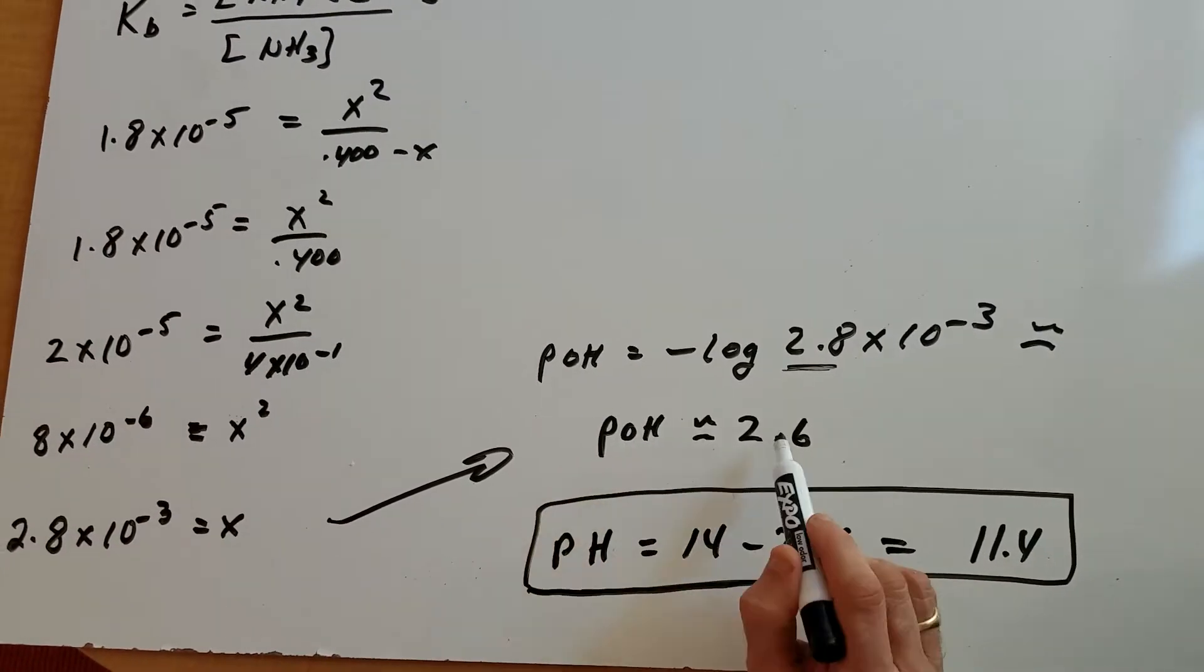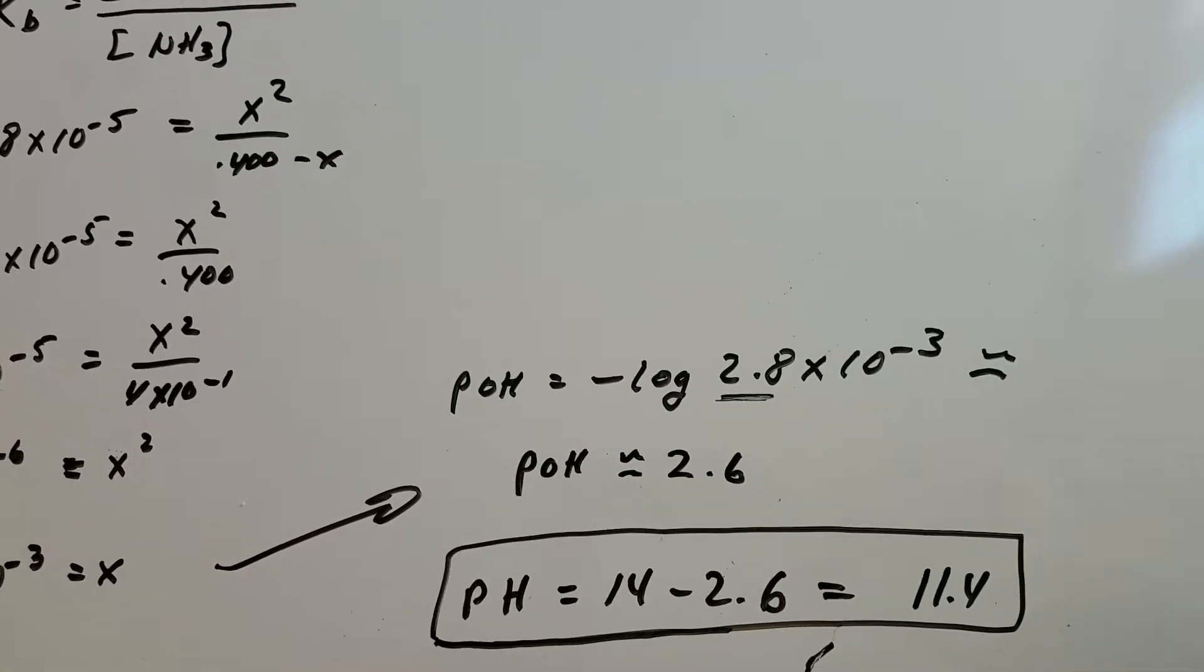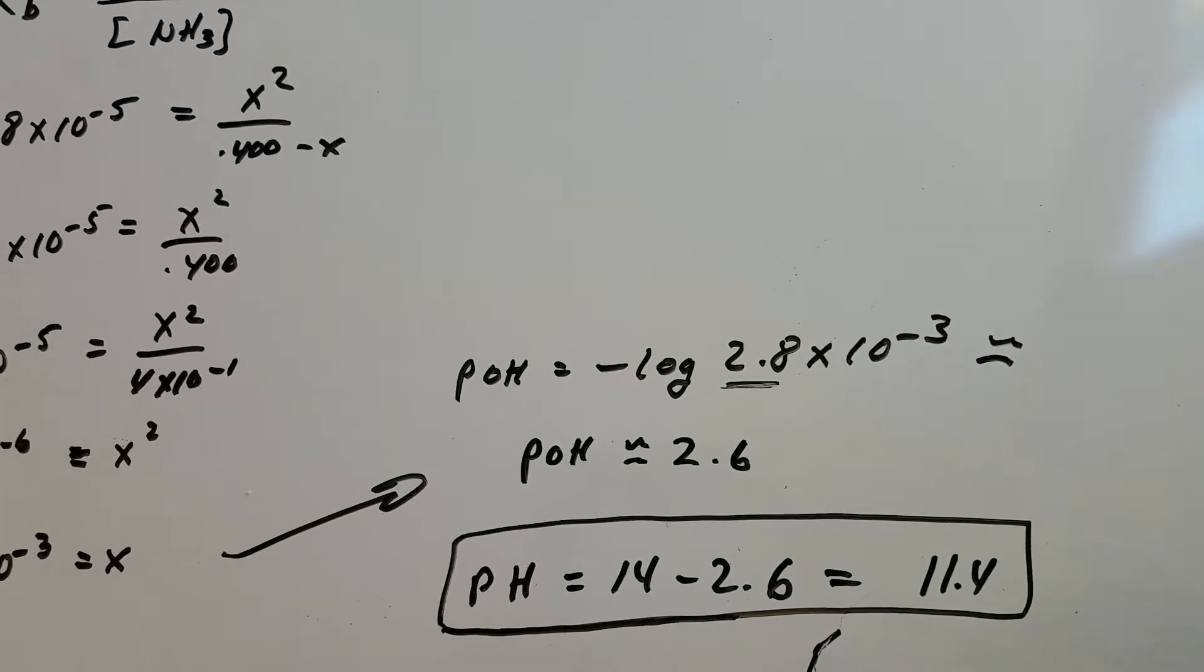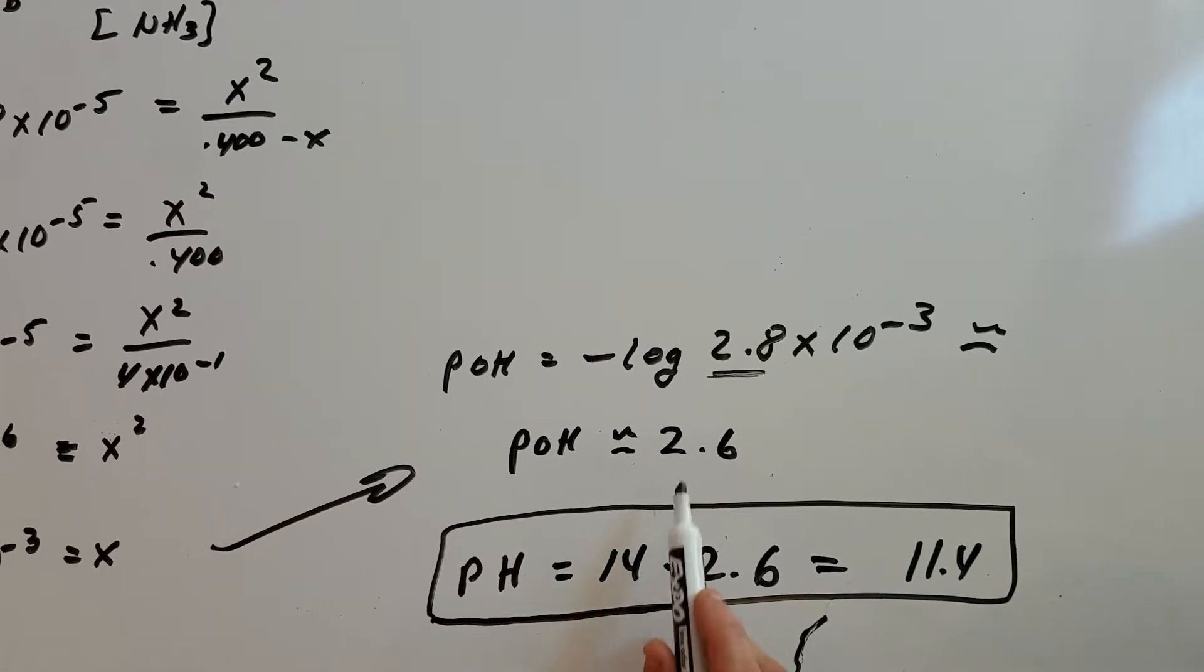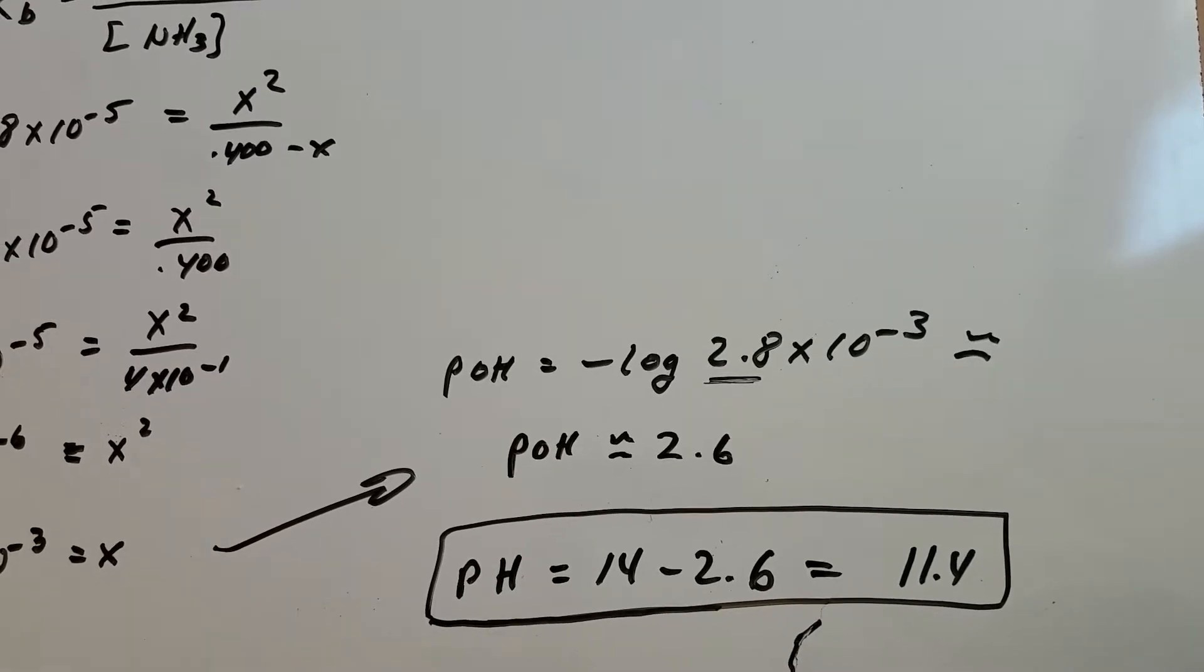Once we get the pOH is 2.6, we want the pH. If you remember, the pH and the pOH equals 14. So if you subtract this from 14, 14 minus 2.6, we get 11.4.